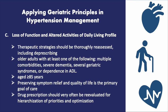Lastly, for the loss of function and altered activities of daily living profile, therapeutic strategies should be thoroughly reassessed, including deprescribing when appropriate. They include older adults with at least one of the following: multiple comorbidities, severe dementia, several geriatric syndromes, or dependence in activities of daily living. Most patients in this group are aged 85 years or older. Preserving symptom relief and quality of life is a primary goal of care. Drug prescription should very often be re-evaluated for hierarchization of priorities and optimization.